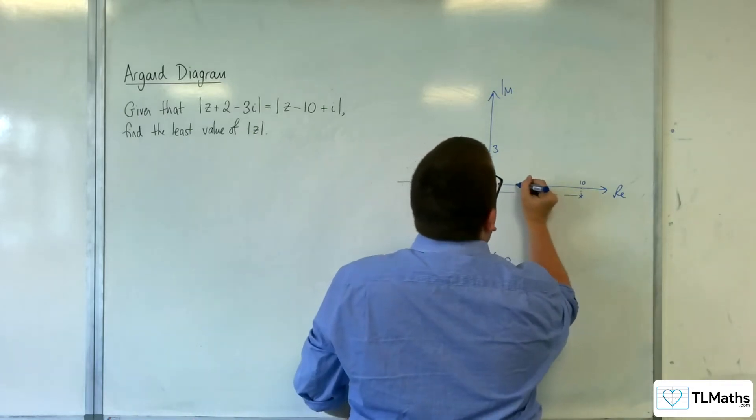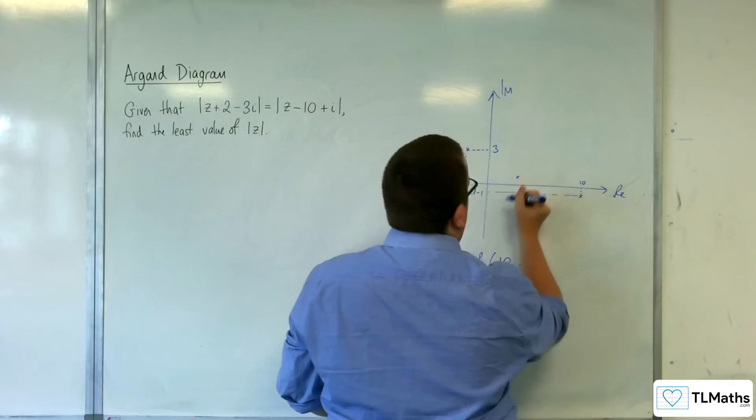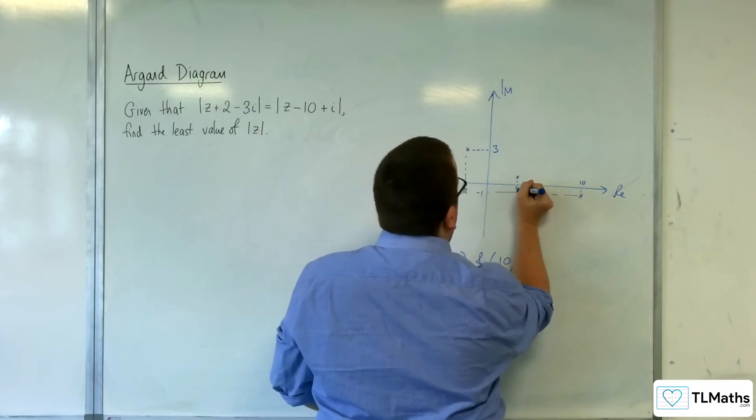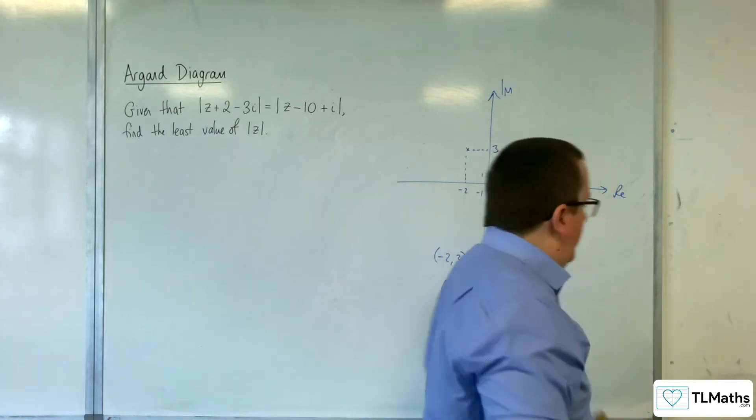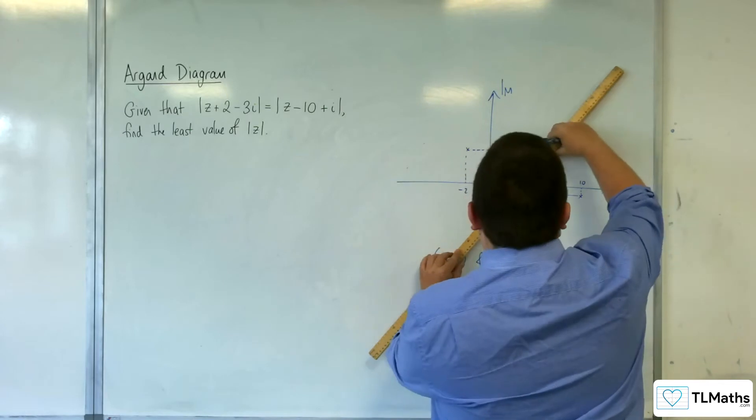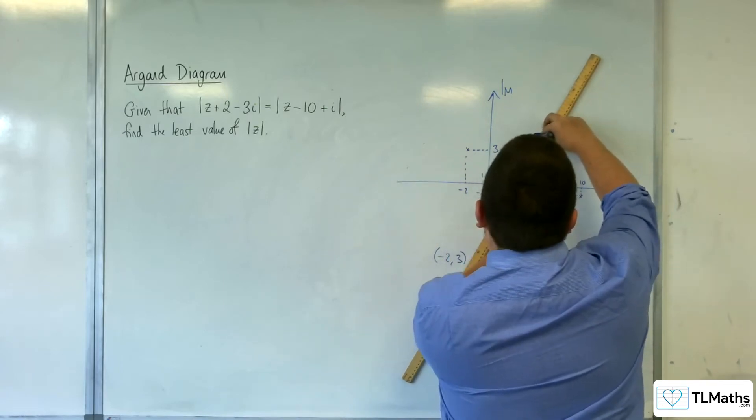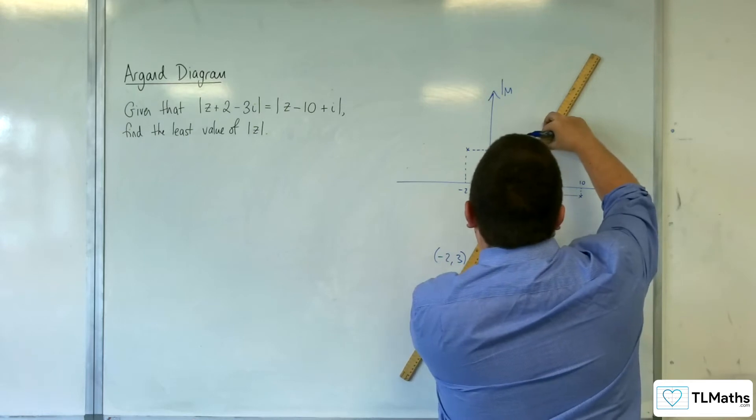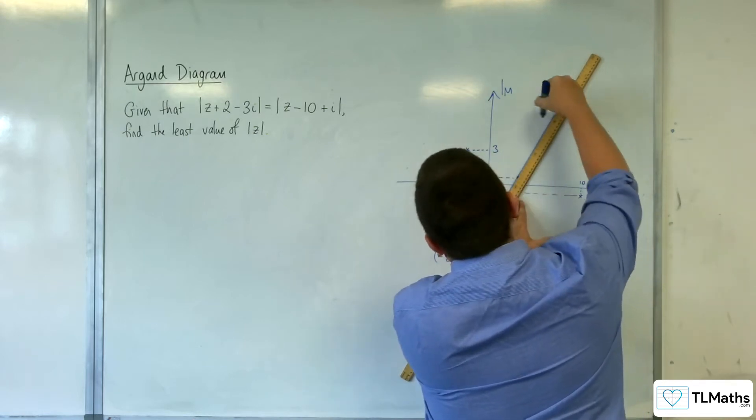So 4, 1, something like that is our midpoint. We've got this line that's going to go through 4, 1. It's going to be perpendicular to both those points, maybe something like this.